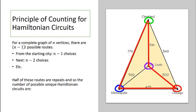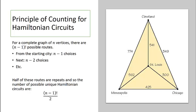As we saw in our example, half of these routes are repeats. So the number of possible unique Hamiltonian circuits will be n minus 1 factorial divided by 2.